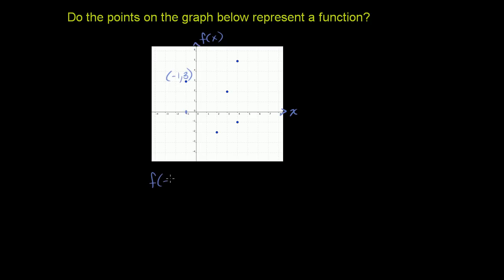So it's telling us that f(-1) = 3. So far, it could be a reasonable function. You give me -1, and I will map it to 3.